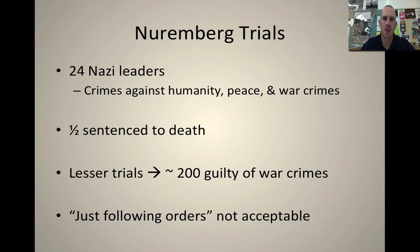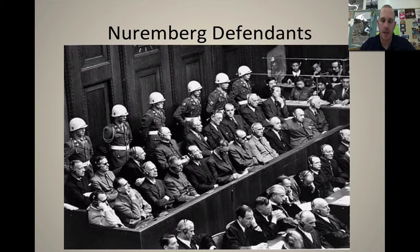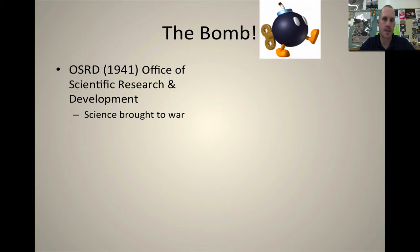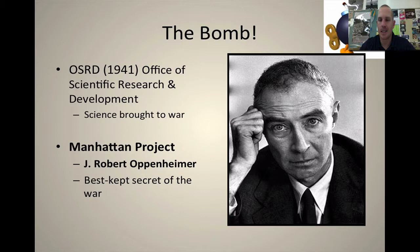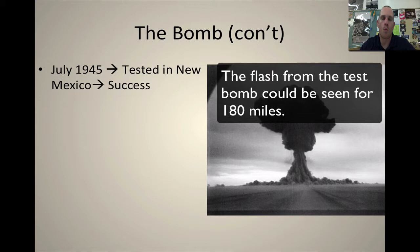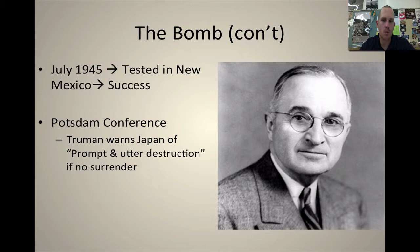You can see the defendants at Nuremberg right here with MPs behind them — the major offenders all sentenced to death. Now, dropping the bomb: the Office of Scientific Research and Development brought science to the war. The Manhattan Project, led by Oppenheimer, was the best-kept secret of the war. Harry Truman didn't even know about it while he was vice president — he doesn't find out until he takes over for FDR. The bomb is tested in July 1945 in New Mexico and deemed a success. When Truman meets with allied leaders at Potsdam, he warns Japan of prompt and utter destruction if they don't surrender, but doesn't spell out what that means. The warning is very vague, so of course they don't give up.